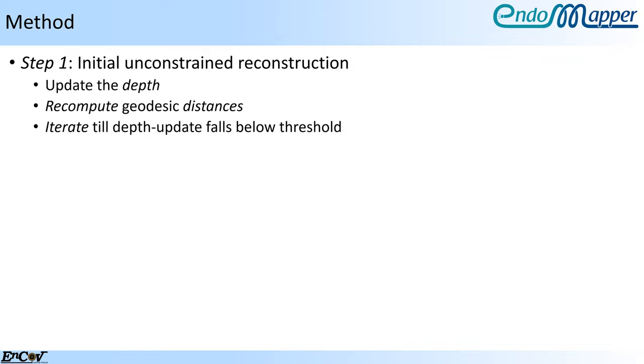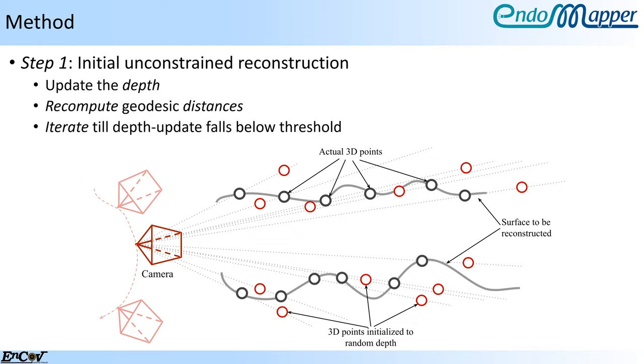This is iteratively alternated with recomputing the geodesic distances from the updated depths. These alternate computations are iteratively continued till the depth updates fall below a predefined threshold.